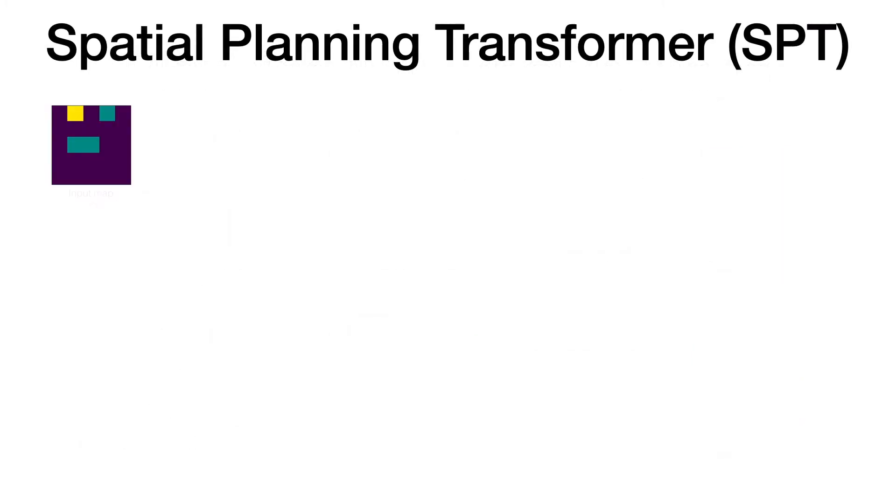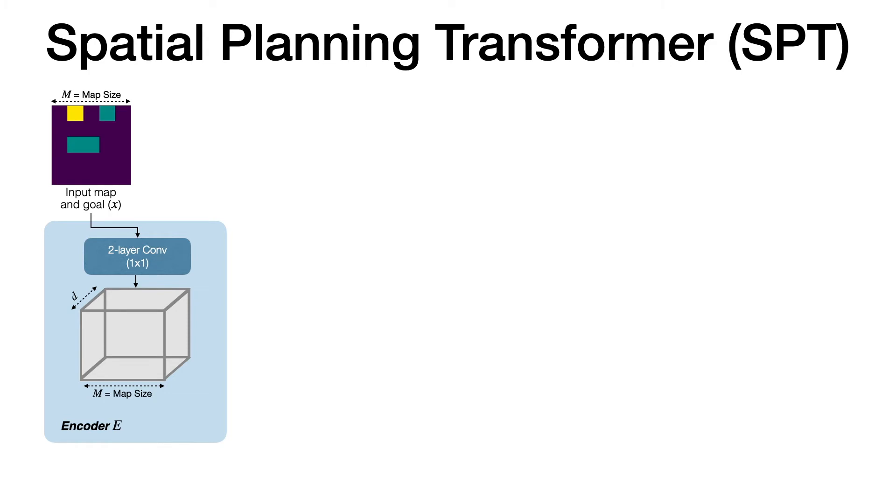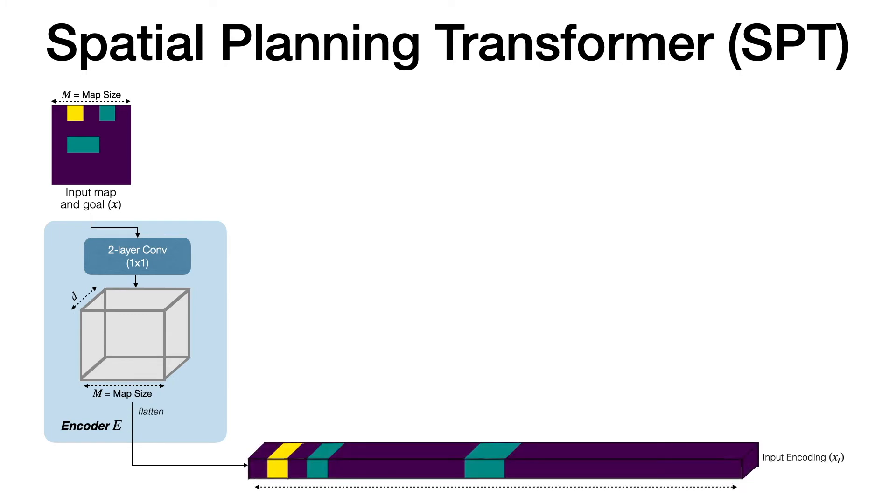We present the spatial planning transformer or SPT model to learn planning. The input and goal location are first passed through an encoder module which consists of 1x1 convolutional layers to get the embedding of each element in the map. The embeddings are then flattened and passed through a transformer module.